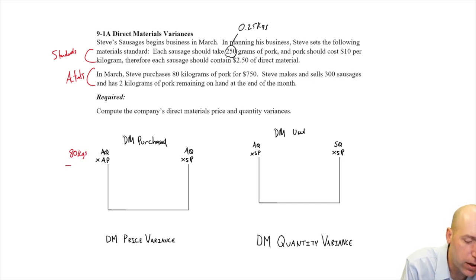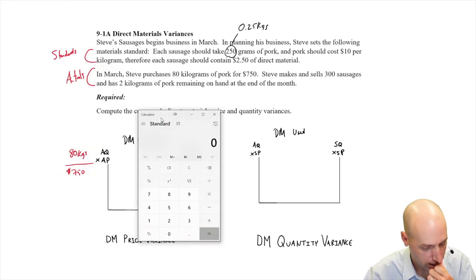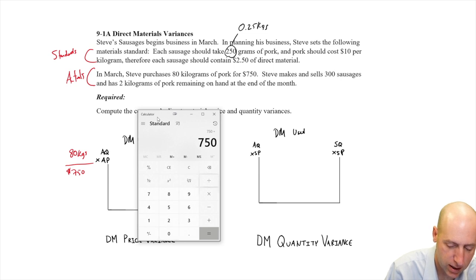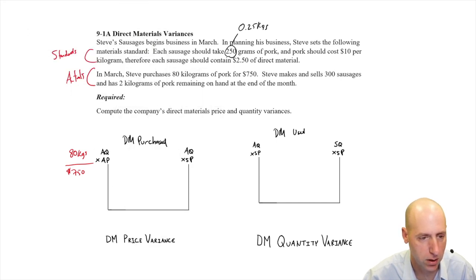We don't know the price per kilogram, but we do know the total here is $750. We can work backwards and figure out a price per kilogram. So $750 divided by 80 gives us $9.375. We spend about $9.40 per kilogram.